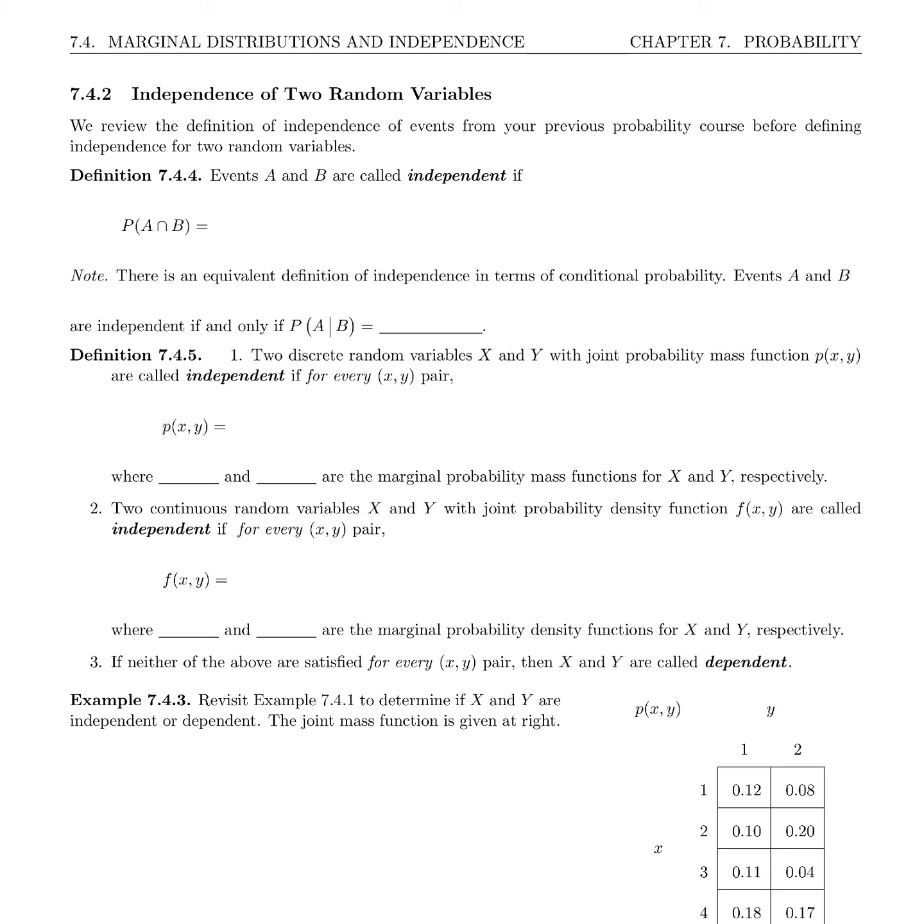In this video we're going to begin subsection 7.4.2 on the independence of two random variables. We're going to review the independence of two events A and B first of all, so definition 7.4.4.